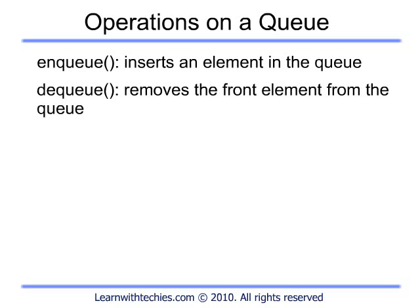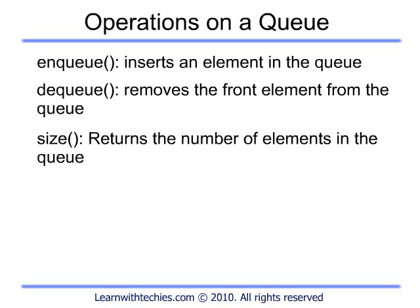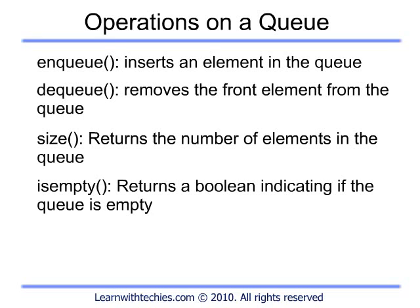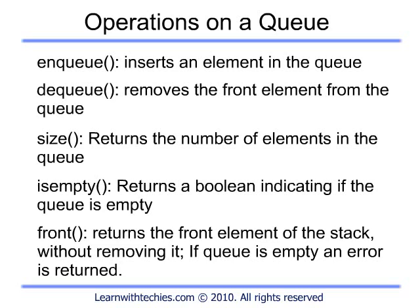If implemented using an array, there is a limit on the number of elements that can be inserted into it. If implemented using a linked list, there is no such limit. The third operation is size — it will tell you the number of elements in the queue at any point of time. The fourth operation is called empty — it will tell you if the queue is currently empty or not. The fifth operation is called front — it will return the front or first element of the queue.